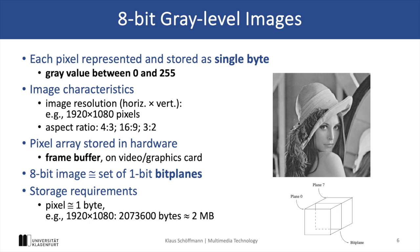The term frame buffer refers to a dedicated memory area that stores image data representing an entire frame or image that will be displayed on the screen. The term bit plane refers to a specific layer in the digital image where each pixel's value is represented by a single bit. For example, if we have an 8-bit grayscale image, we would have 8 different bit planes, and each one represents the 2D area of the corresponding bit level.